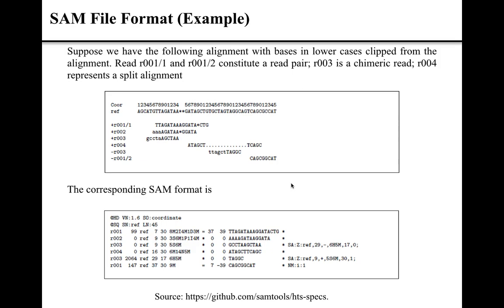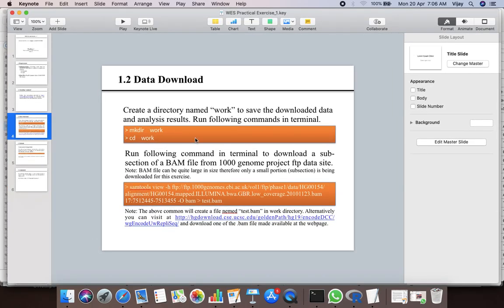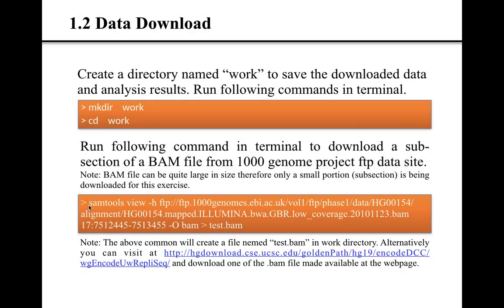At this point it would be better to look at a real example of SAM file format. I have already downloaded a subsection of a BAM file from the 1000 Genomes Project. SAMtools was used to convert the BAM file into the SAM file. You can download the same BAM file subsection using the set of commands provided. I used the SAMtools view command to download reads aligned to a subsection of chromosome 17. The command is available in the description of this YouTube video.